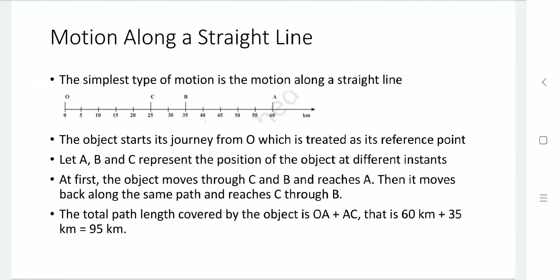Now, motion along a straight line — the simplest type of motion — is where an object moves in a straight line. The reference point or origin is defined as O, and the final point as A. The object moves from O to A, passing through points C and B. So the object moves from O to C to B and reaches A, the final point. The total path length is 60 kilometers.